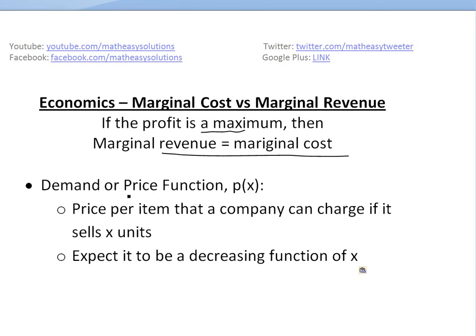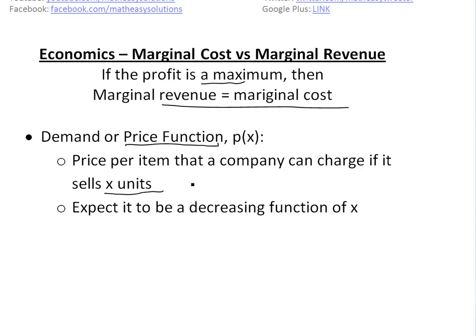Let's call the demand or price function basically the price per item that a company can charge if it sells X amount of items, and we expect it to be decreasing. For example, if you're selling a hundred cars you could sell them for less money, since you produce them at a lower cost per car. But if you're only selling one car, you need to make a lot more money, say $5,000. So it should be a decreasing function.